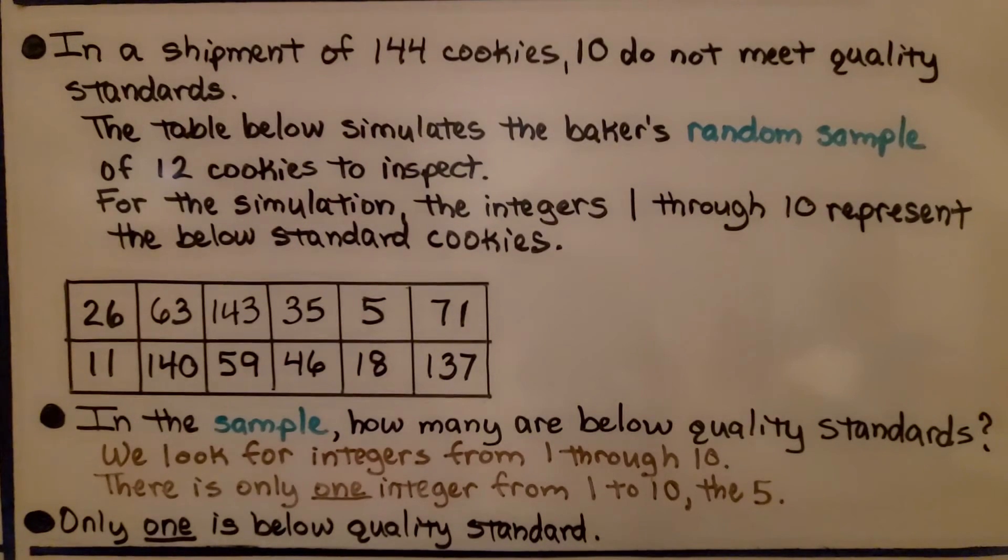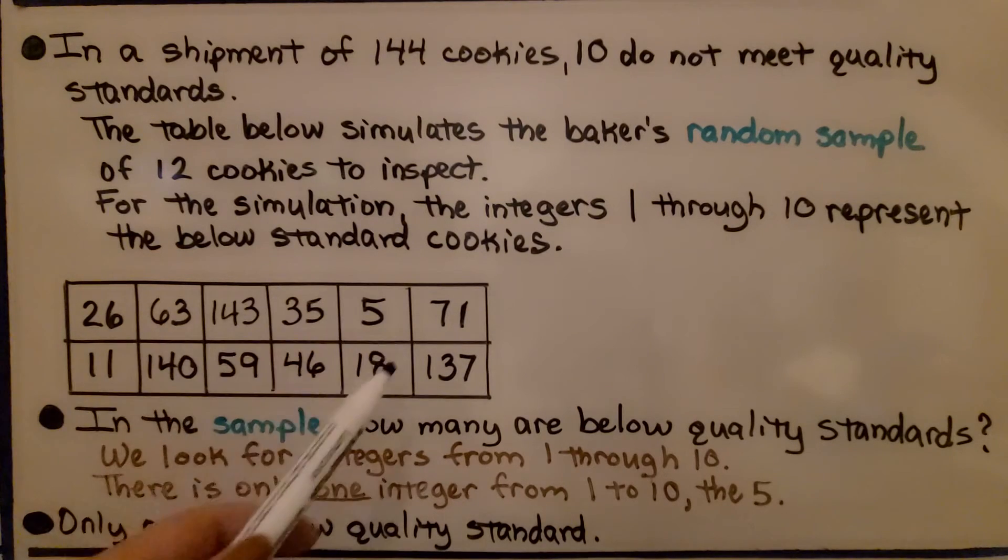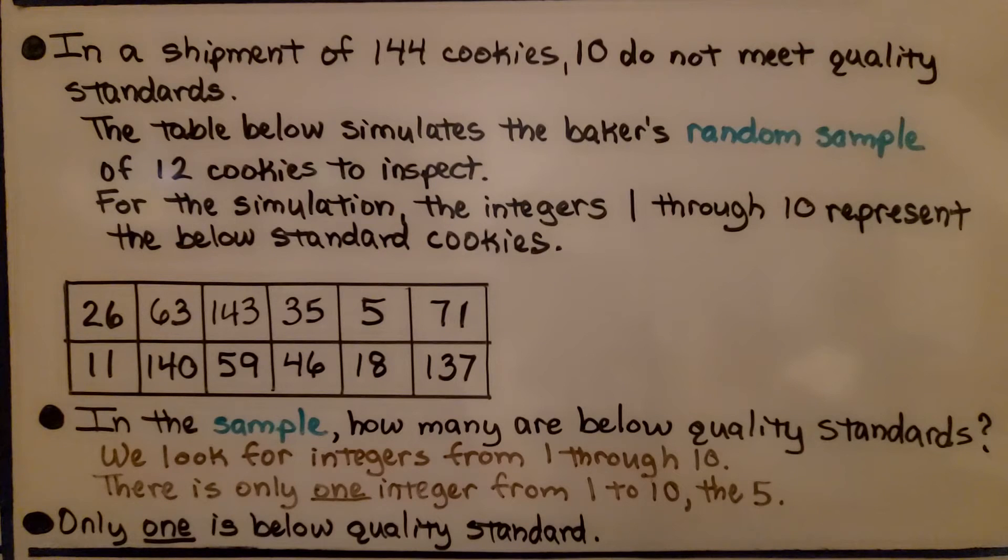In a shipment of 144 cookies, 10 do not meet quality standards. Maybe they're broken, maybe they're supposed to be round, and these 10 are not round. The table below simulates the baker's random sample of 12 cookies to inspect. For the simulation, the integers 1 through 10 represent the below standard cookies, because there's 10 that don't meet the quality standards. So we can see the different numbers here in the table.